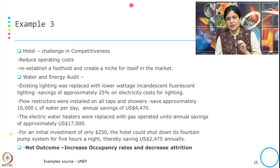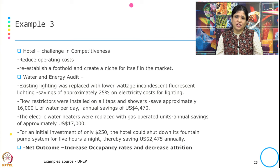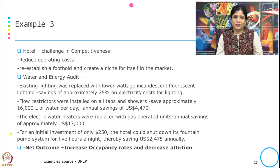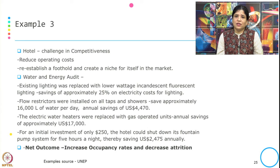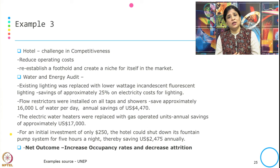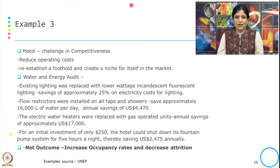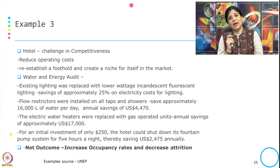Let us get into example three. This is the example of a service industry — specifically a hotel — and the situation the hotel was facing was a challenge with respect to declining competitiveness. What they thought of doing was reducing operating costs and also reestablishing their foothold and creating a niche for themselves in the market. The first thing they did was a water and energy audit — determining how much they consumed in water and energy and how much they could save by changing the process or making some design changes.